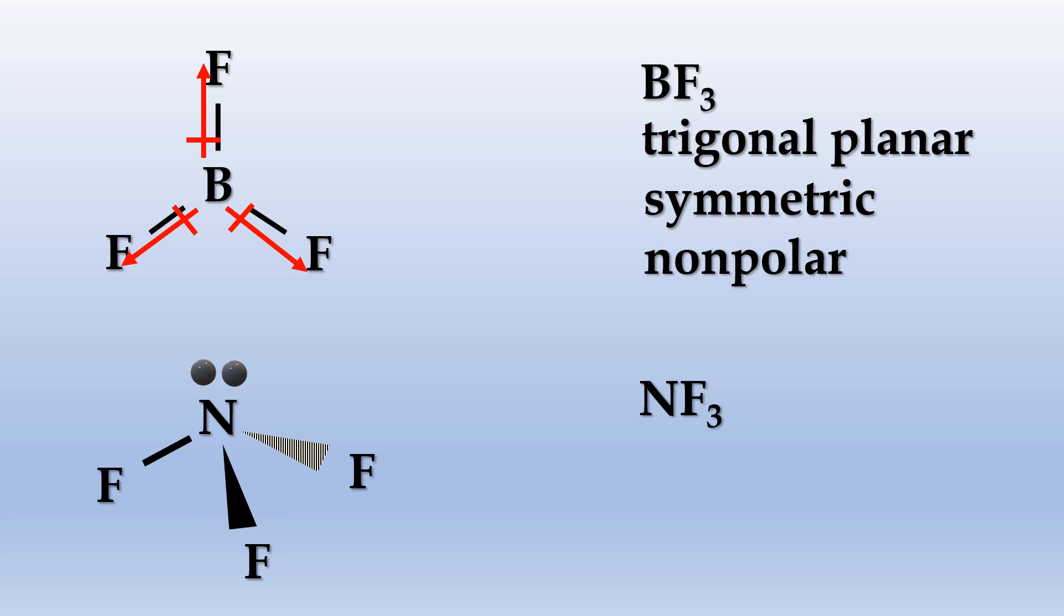On the other hand, nitrogen trifluoride has a lone pair of electrons on the nitrogen atom, so the three fluorine atoms are pushed below the plane. This results in a trigonal pyramid shape.